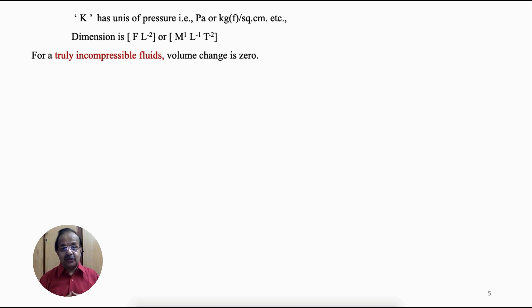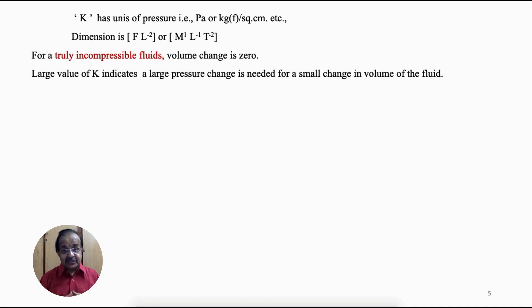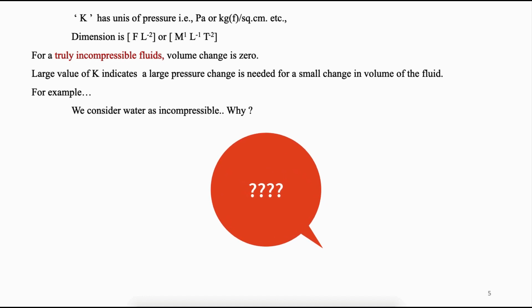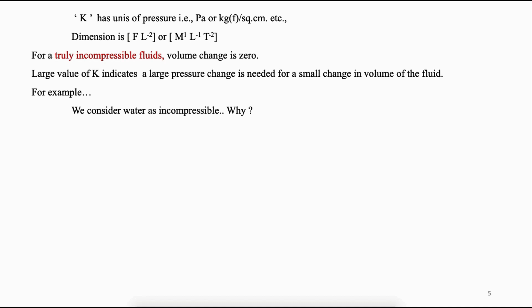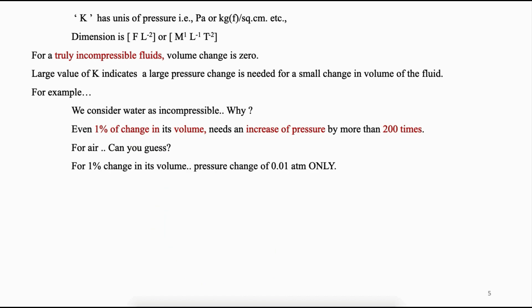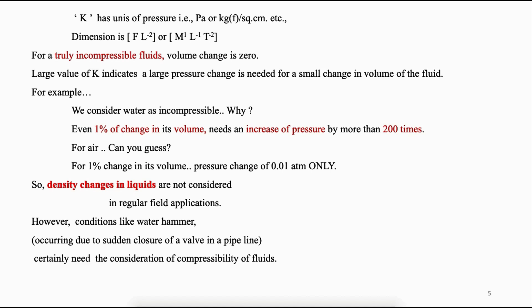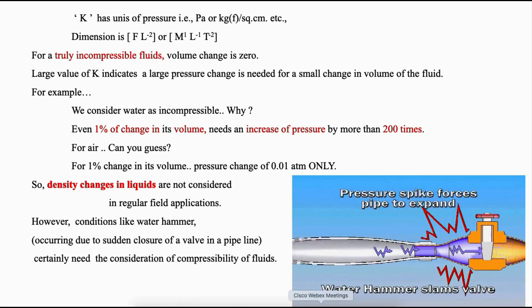For a truly incompressible fluid, volume change is zero, and a large value of K indicates that a large amount of pressure is needed for even a small change in volume. For example, we consider water as incompressible because even a one percent change in its volume needs an increase in pressure by more than 200 times. For air, only 0.01 atmosphere change is required to establish a one percent change in volume. So density changes in liquids are not considered in regular applications — that is why liquids are considered incompressible. However, conditions like water hammer certainly need consideration of compressibility.